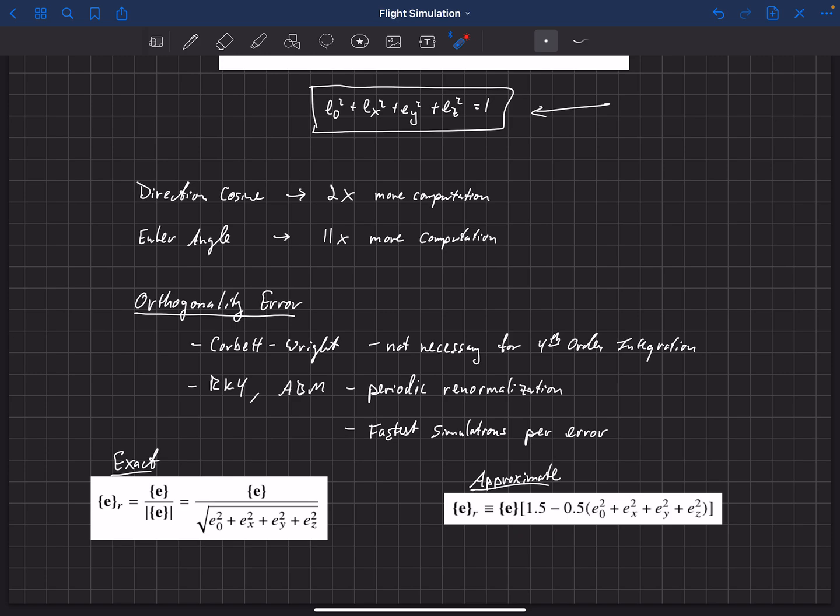And by the way, in the previous video, when I developed this, I wrote this in terms of the error, what we defined as errors. So epsilon equals 1 minus, and then it was E naught squared plus EX squared plus EY squared plus EZ squared. And so we came up with an equation in terms of epsilon, but if you just plug in this definition for epsilon, then you come up with this equation here.